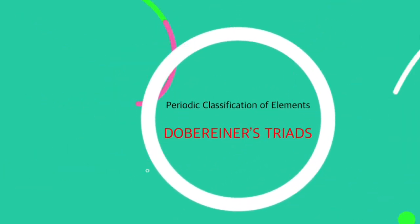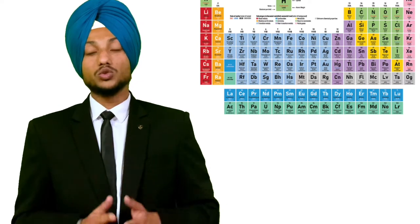Let's look at the periodic classification of elements. There are 118 elements known at present and it is very difficult to study the properties of all these elements separately. So all these elements have been divided into groups such that elements in the same group have similar properties. In this way the study of a large number of elements is reduced to the study of a few groups. This is the reason for the periodic classification of elements.